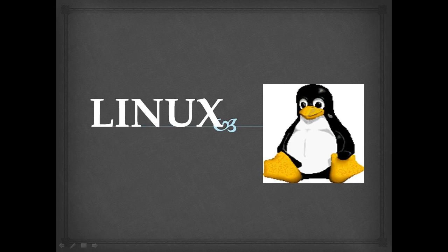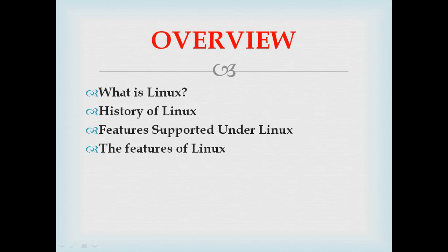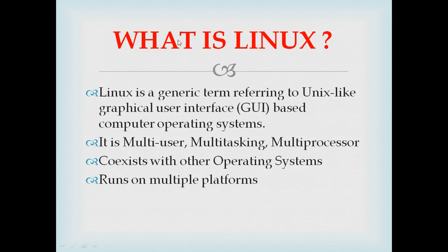Let us talk about Linux — what is Linux, history of Linux, features supported under Linux, and the features of Linux itself. This is what we are going to cover today. Linux is a generic term referring to a UNIX-like, GUI-based computer operating system. It is essentially an operating system that is multi-user, multitasking, and multiprocessor — three features we are going to see in detail.